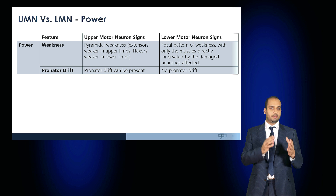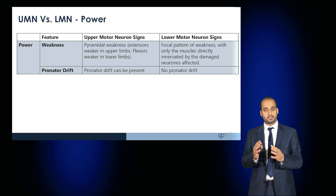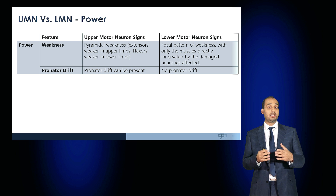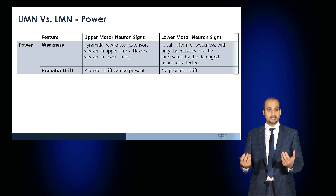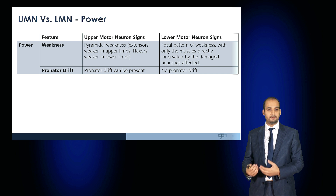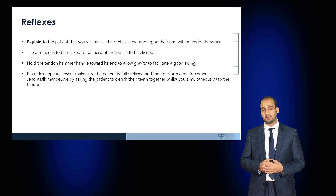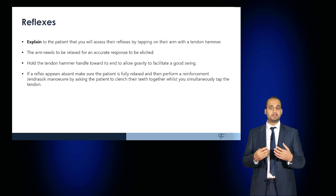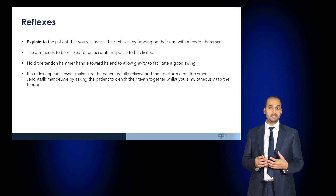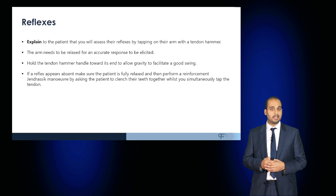As a reminder: upper motor neuron signs show a pyramidal pattern — extensors weaker in the upper limbs, flexors weaker in the lower limbs — with the presence of a pronator drift, whereas lower motor neuron signs suggest focal weakness in the muscles directly innervated by the damaged nerves. After examining power, move on to examine the patient's reflexes. Explain to the patient that this will be done by gently tapping their arm in various positions using a tendon hammer.